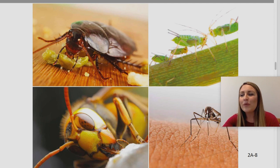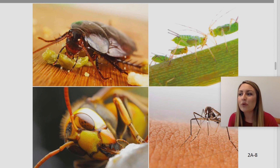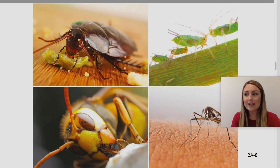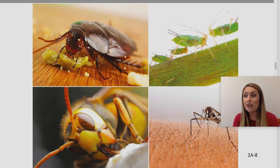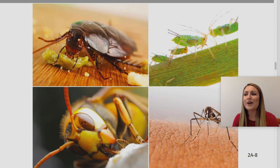Today we are going to continue learning about insects and their main body parts by exploring more information and the relationship of the words microscopic and gigantic. At the end of today's lesson, you will get a chance to create a project highlighting two very different insects. Listen carefully so you will know exactly how to complete your project. Oh, projects are my favorite!